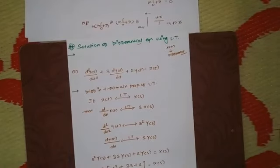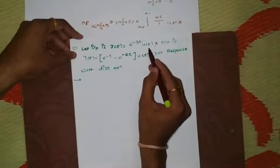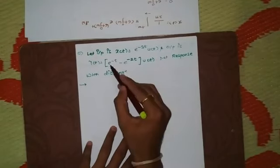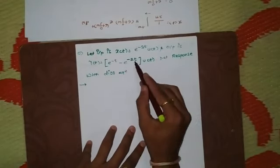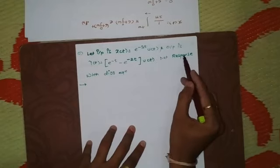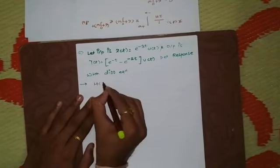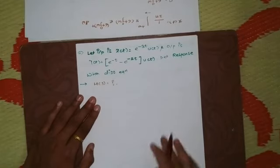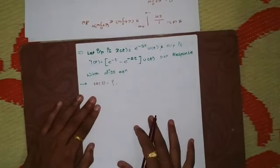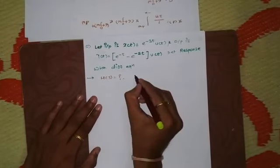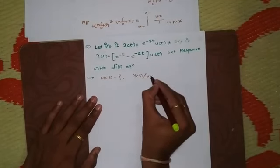Now we'll see one more example: how to determine the differential equation. The question states: let the input of an LTI system be x(t) = e^(−3t)·u(t) and the corresponding output be y(t) = [e^(−t) − e^(−2t)]·u(t). We are asked to determine the response and the differential equation. The response is H(s) = Y(s)/X(s).